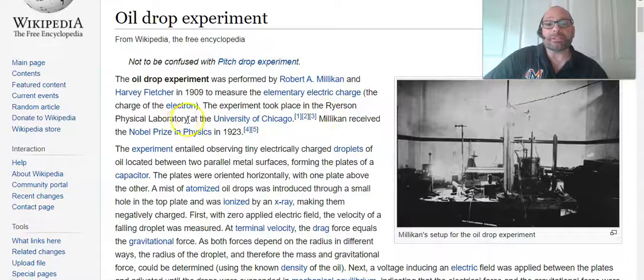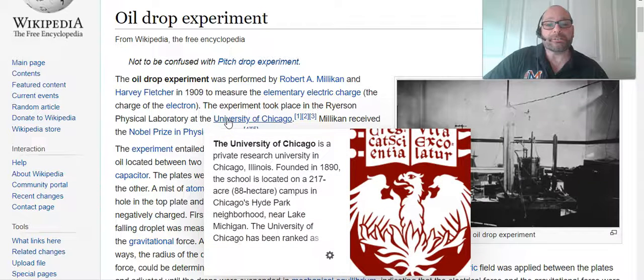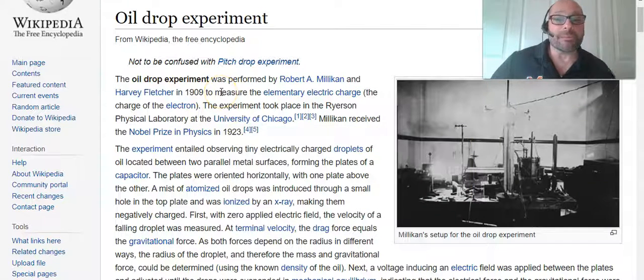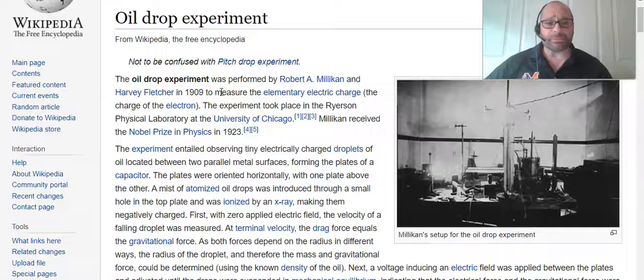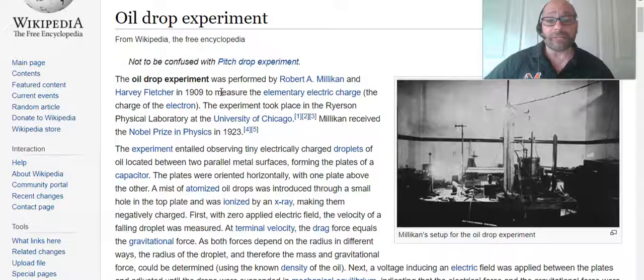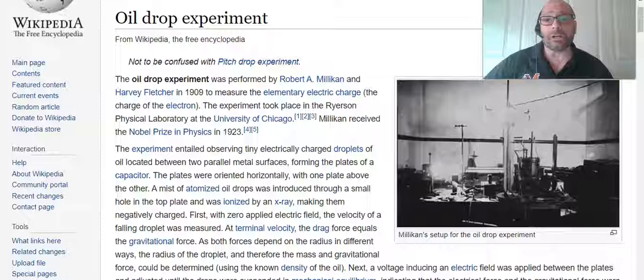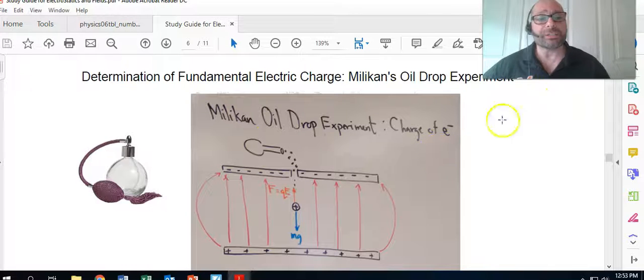place in Ryerson Physical Laboratory at the University of Chicago, and Robert Millikan won the Nobel Prize for this because he was the first person to discover the electrical charge of an electron itself. So how did he do that?